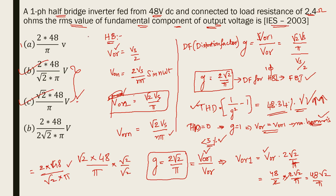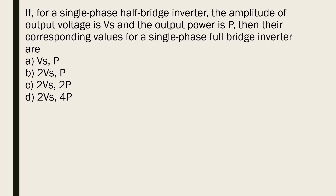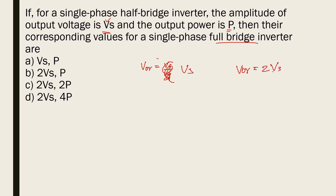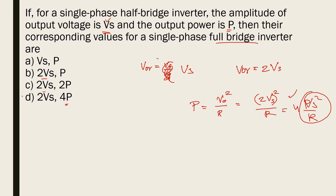Another question: for a single-phase half-bridge inverter where the amplitude of output voltage is Vs, what is the output power for a single-phase full-bridge inverter? For a half-bridge, output RMS = Vs/2; for a full-bridge, output RMS doubles to Vs (if half-bridge amplitude is Vs, full-bridge gives 2Vs). Power = V²/R. Since voltage doubles, power increases by a factor of 4. So power for the full-bridge is 4 times that of the half-bridge — option D.